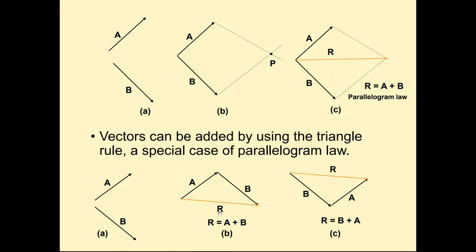We can also add vectors A and B by using the triangle rule, where vector B is added to vector A in a head-to-tail way. The resultant obtained is from the tail of A to the tip of B. If you notice, the same R is going to be the result when vector A is added to vector B. Therefore, vector addition is commutative.